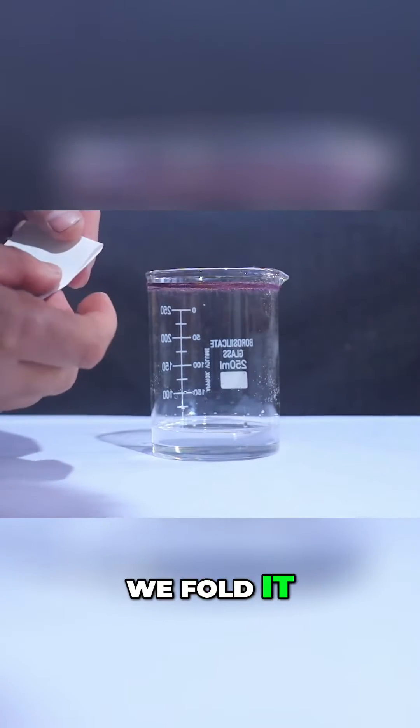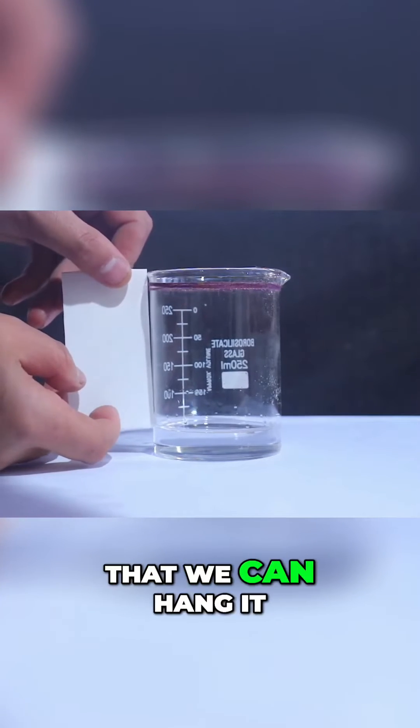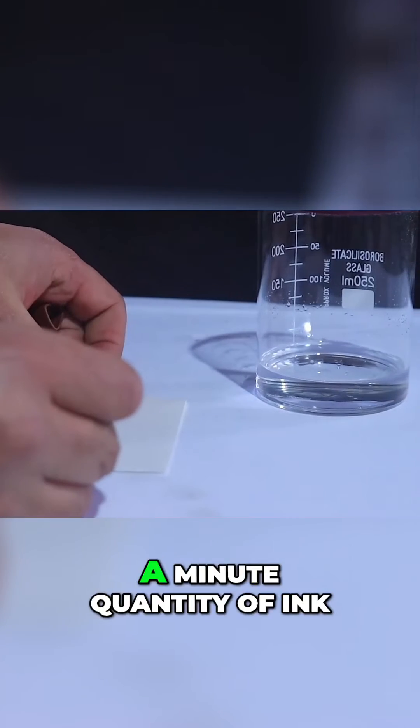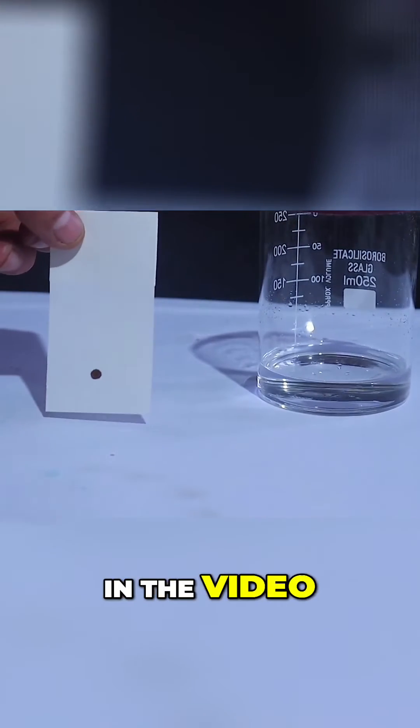We fold it in this way so that we can hang it on the thread fitted on the top of the beaker. Then we put a minute quantity of ink at the bottom as shown in the video.